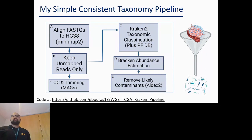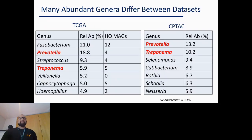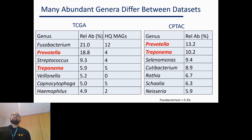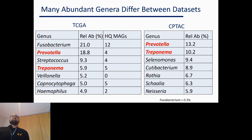Looking at the results: the top genera in both cohorts — interestingly, not many are actually shared. The two in red, Prevotella and Treponema, were both reasonably common. Fusobacterium, the most studied cancer-associated microbe, was barely found in one dataset but was the top bacterium in another. To verify that some of these bacteria were actually in the tumors, I derived metagenome-assembled genomes for the TCGA dataset for samples with quite a lot of bacteria, and found a reasonably good relationship between the relative abundances.